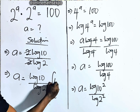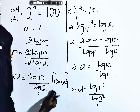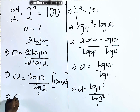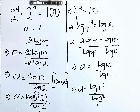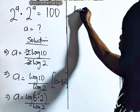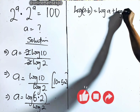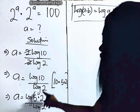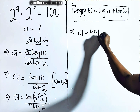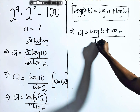Now, 10 is the same as 5 multiplied by 2. So we are going to apply that here. This gives us a is equal to log of 5 times 2, divided by log of 2. And remember, for every log of a multiplied by b, it is log of a plus log of b — multiplication turns to addition. So we have a is equal to log of 5 plus log of 2, all divided by log of 2.